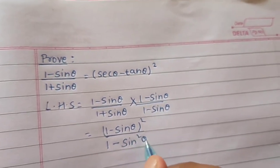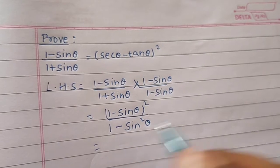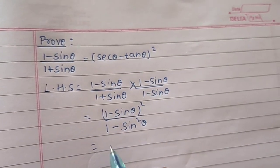So, 1 minus sin square theta. Now, we can open the square bracket.